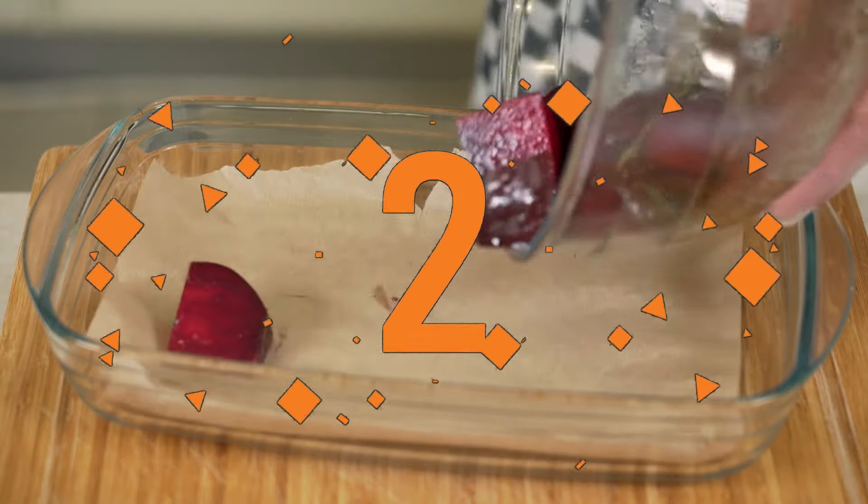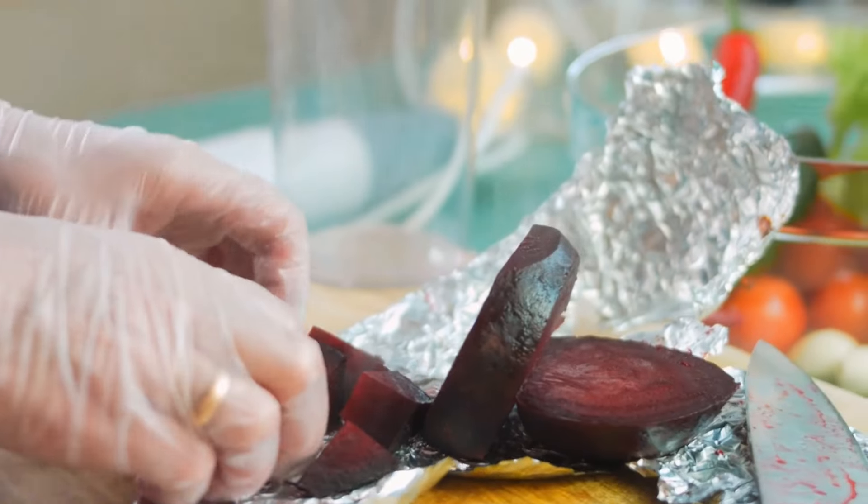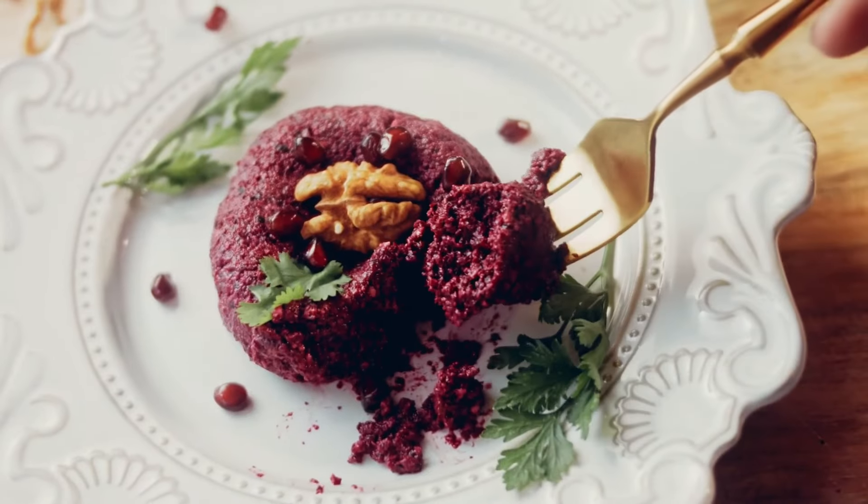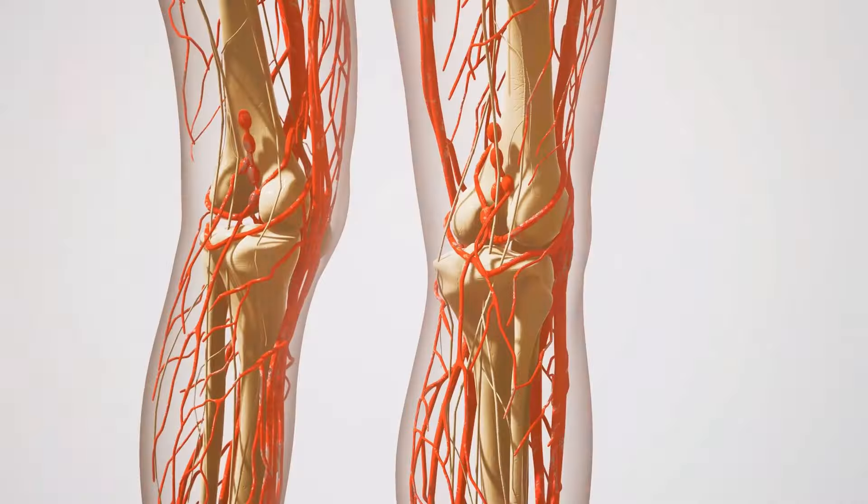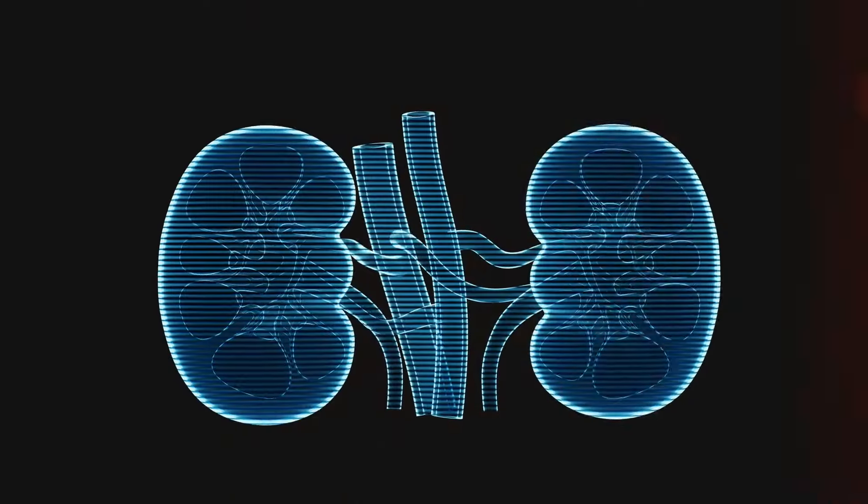Don't be scared of the vibrant color. Beets are a great source of nitrates, which your body converts into nitric oxide. This molecule helps relax blood vessels and improve blood flow throughout the body, including the kidneys.